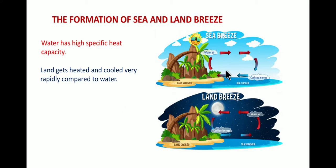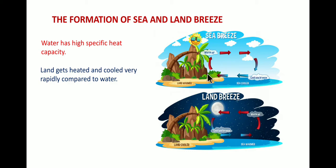As you can see in the picture, during the daytime, compared to water, land gets heated up faster and water gets heated up very slowly. As a result the hot air from land rises up, and when the hot air rises up, there is a low pressure area which is covered by the cold air from the sea. The air above the water reaches the land and tries to fill in the space where the hot air has risen up.